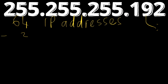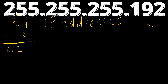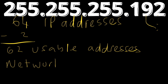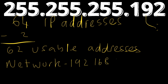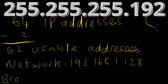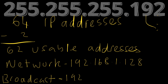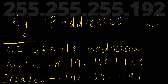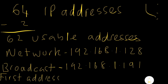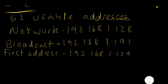Subtracting two accounts for the network and broadcast address, leaving 62 usable addresses. The network address is 192.168.1.128. With 64 addresses starting at 128, the broadcast address is 192.168.1.191. The first usable host address is 192.168.1.129 and the last usable address is 192.168.1.190.